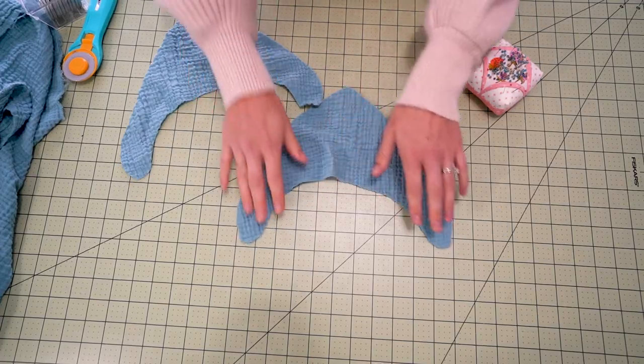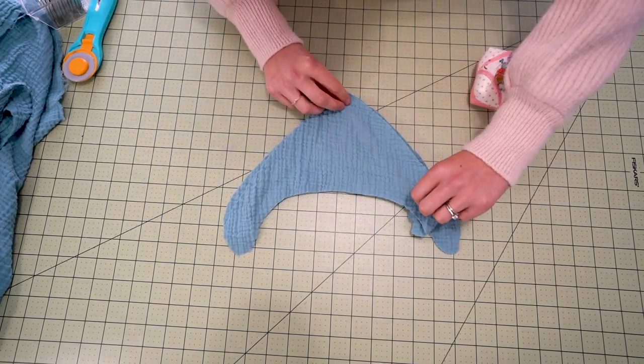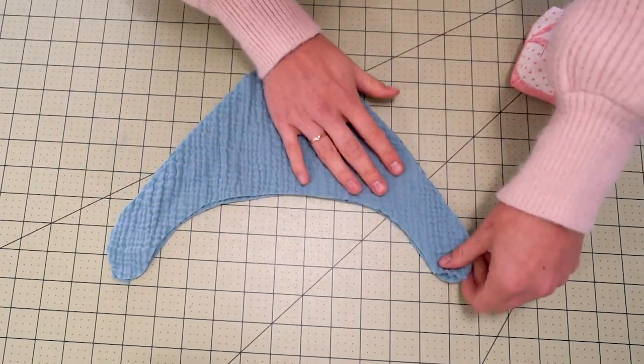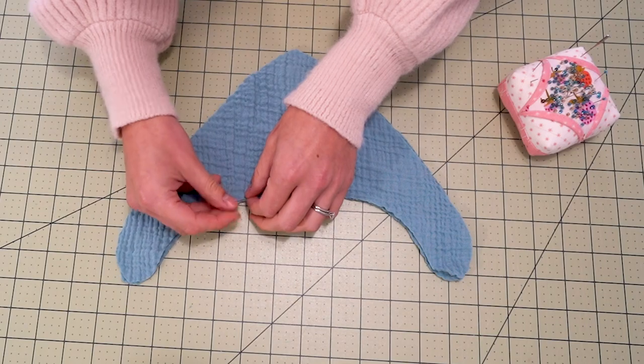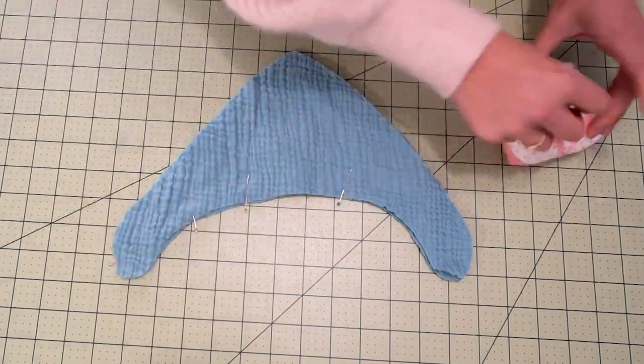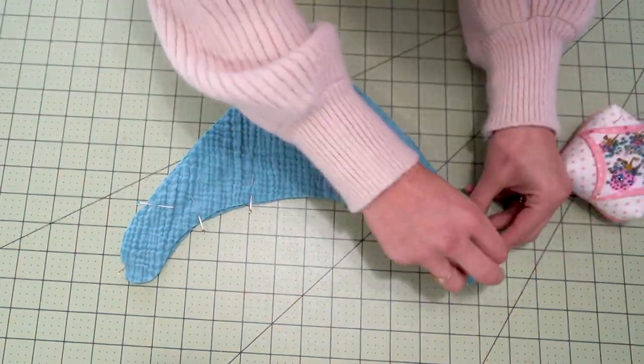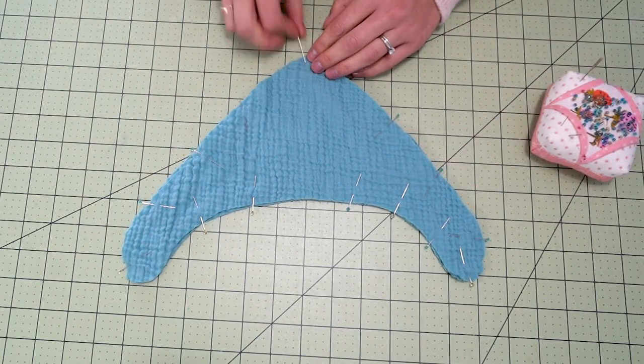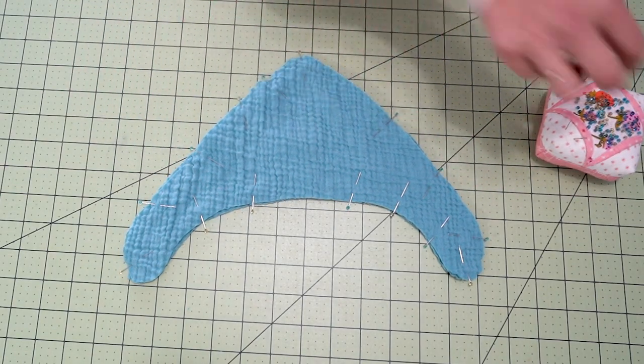Number two we're going to stitch up our bandana. So we are going to place right sides together on the fabric and just match up all of the edges and then place your pins or clips in place. Because I am making a really small sized version these pins work quite nicely and give a nice precise area here.